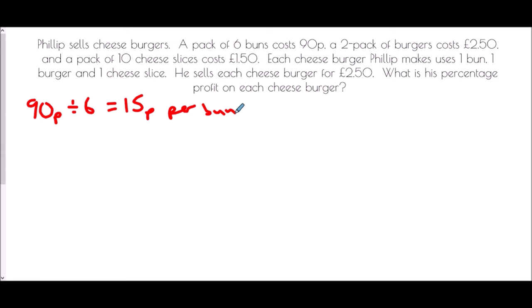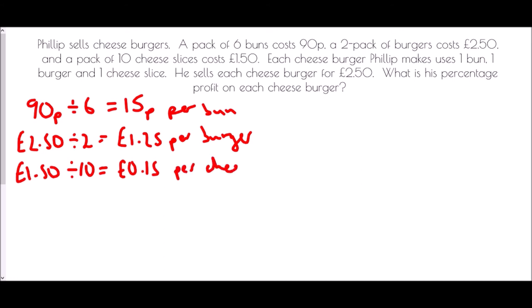There is a two pack of burgers costing £2.50 and therefore a single burger is going to be half of that. So that is going to be £1.25 per burger. And then the pack of 10 cheese slices is £1.50. And so if I only want one cheese slice well that is going to be 15p. And so how much is a single burger costing to make? Well that is 15p plus £1.25 plus 15p. So if I add all of those together what I actually get is that it costs £1.55 to make a burger.